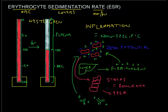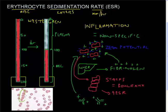Here is an example of what rouleaux looks like on a peripheral blood smear — you can see a little stack of red blood cells, and this is often indicative of some underlying inflammatory or infectious process.